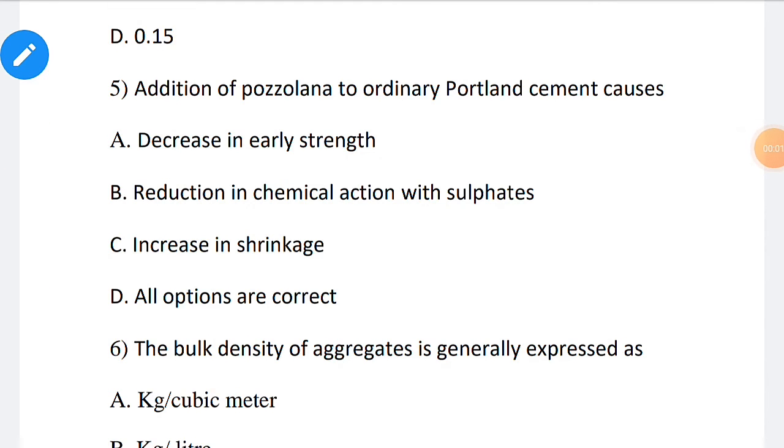Fifth one: Addition of pozzolana to ordinary Portland cement causes? While adding pozzolana or fly ash to ordinary Portland cement, it causes decrease in early strength and reduction in chemical action with sulfate, and also increase in shrinkage and reduces the bleeding. Therefore, the correct answer for this question is option D: all the options are correct.